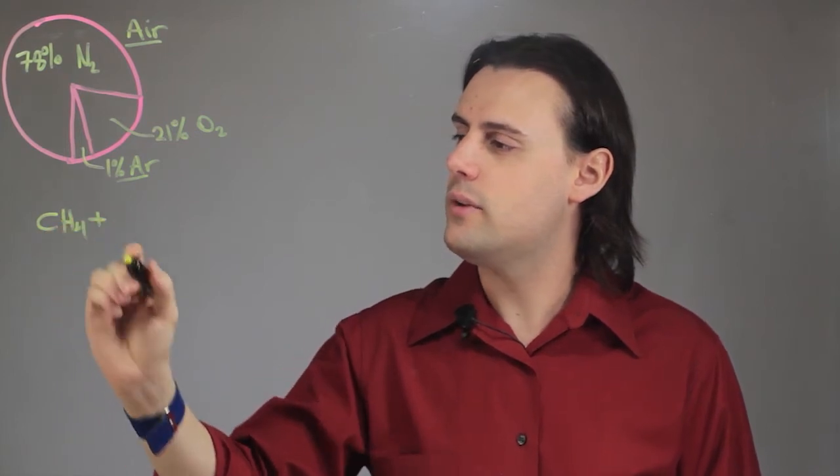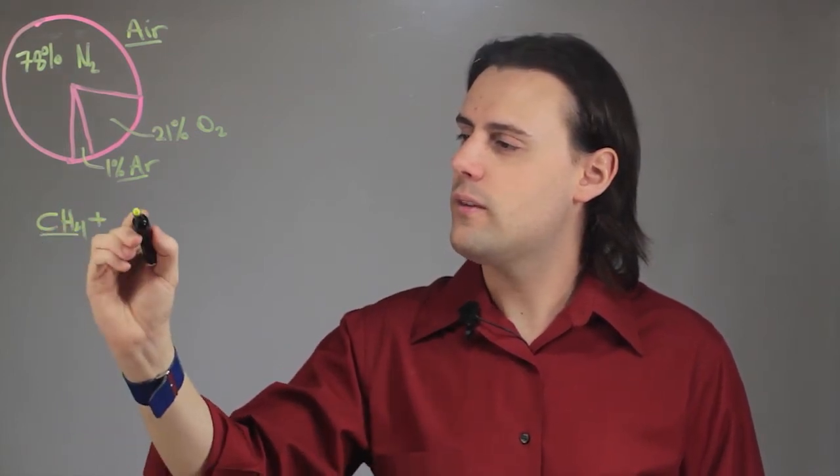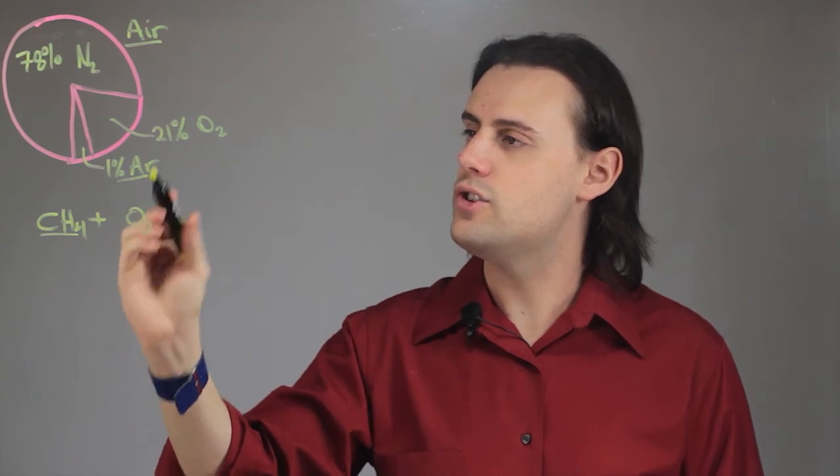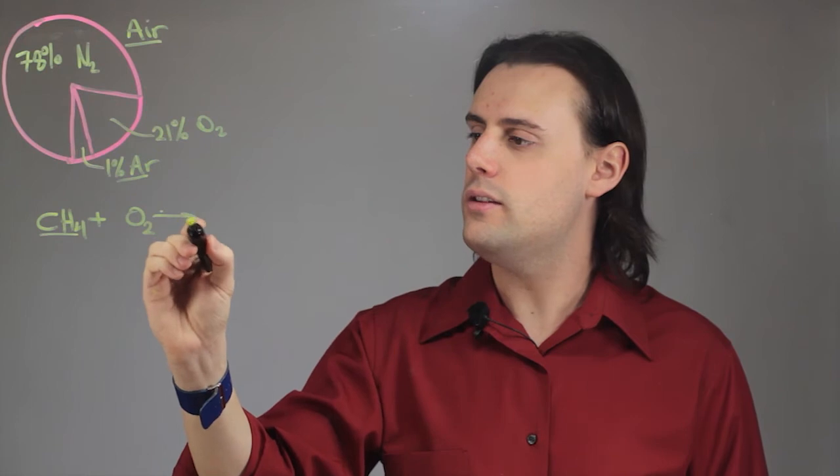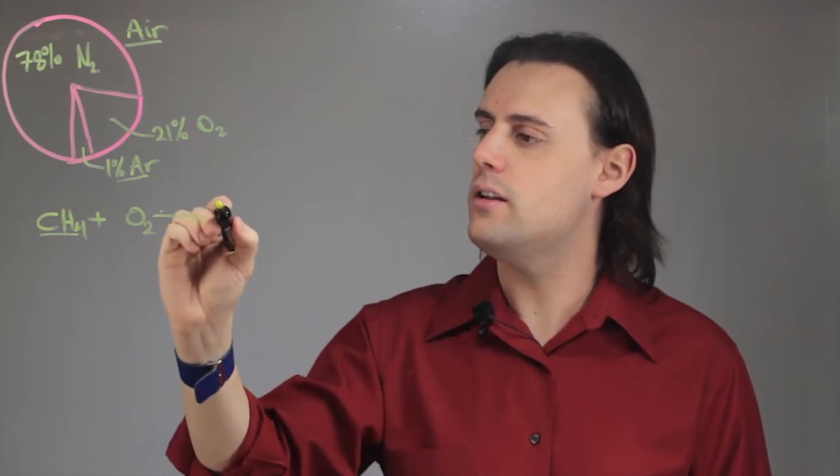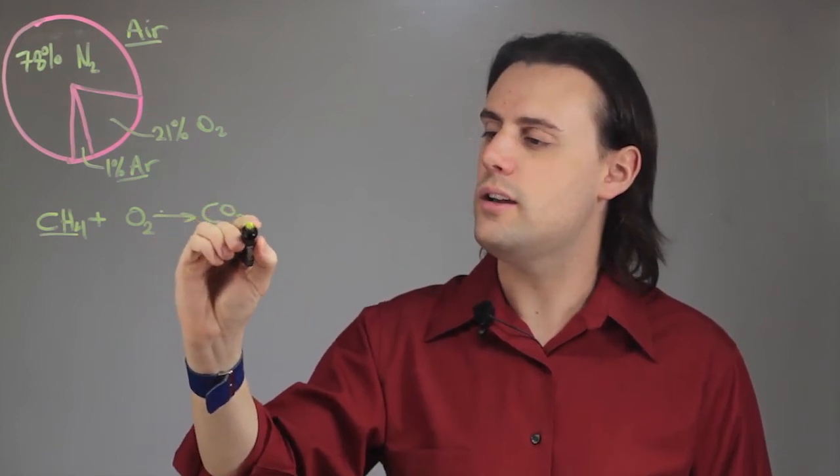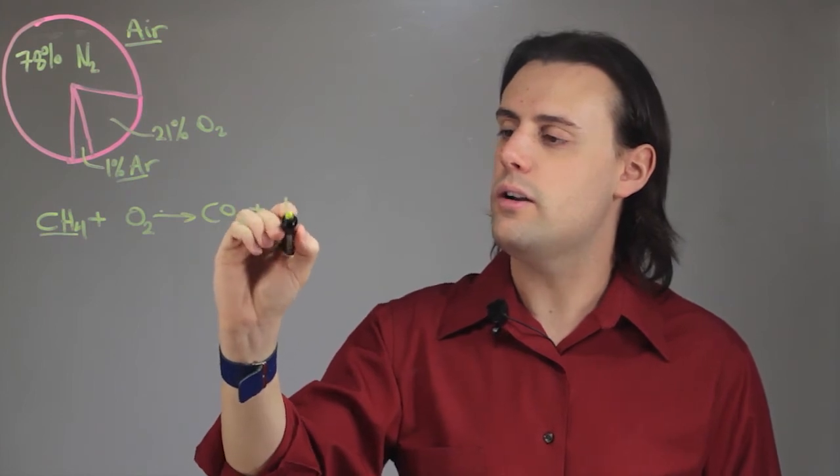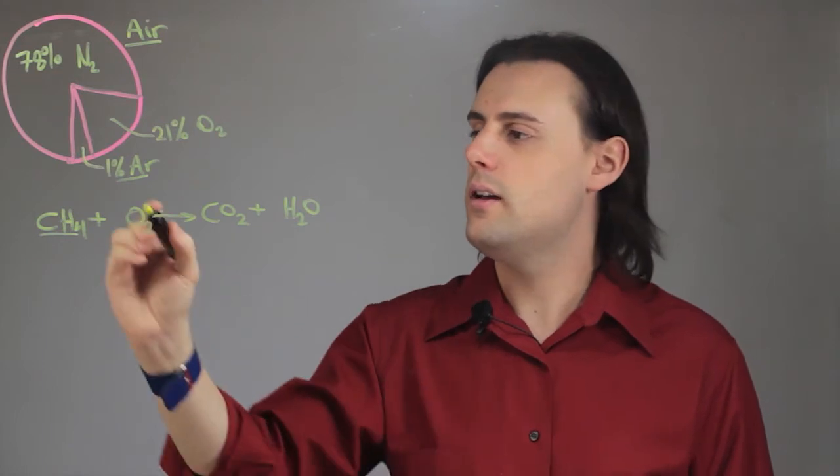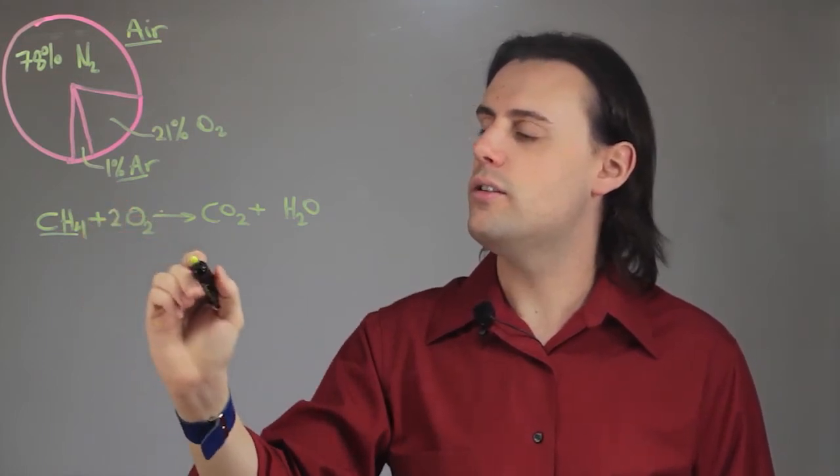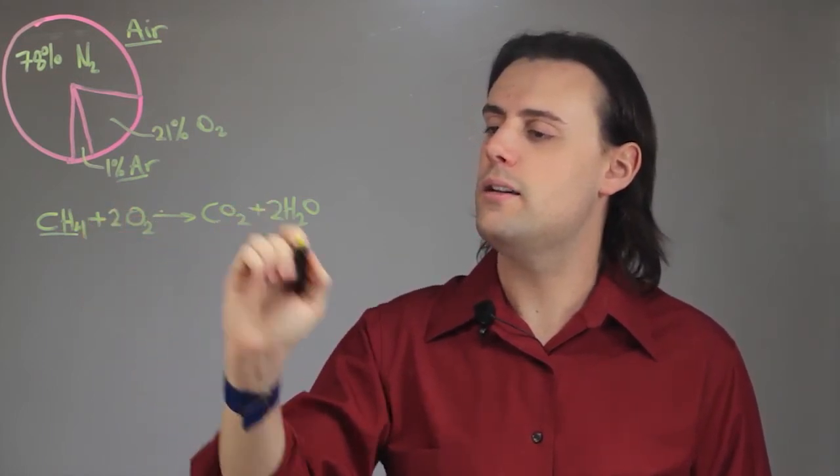So, we have our fuel and our oxygen, O2, that comes from the air, and this will be converted into carbon dioxide, CO2, plus water, H2O. And we can balance this equation by placing a 2 in front of O2 and H2O.